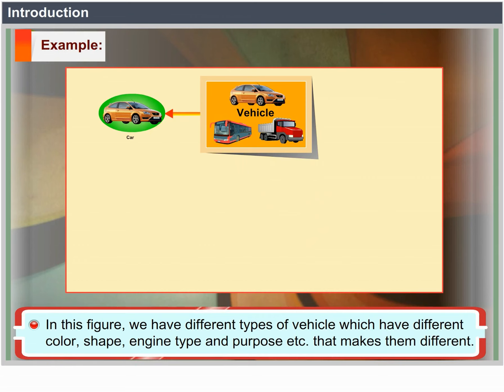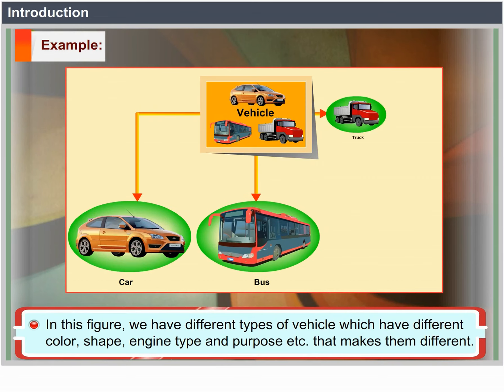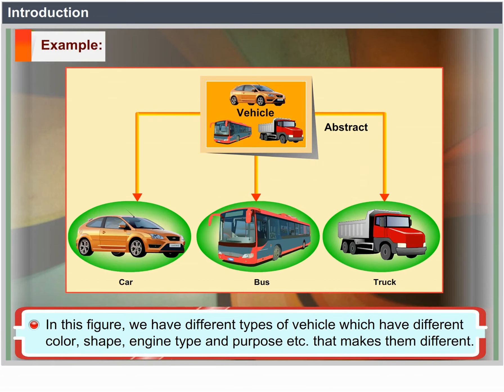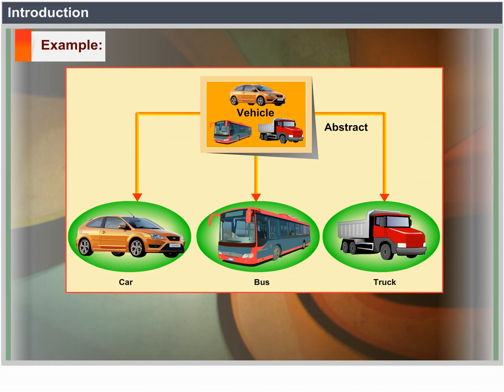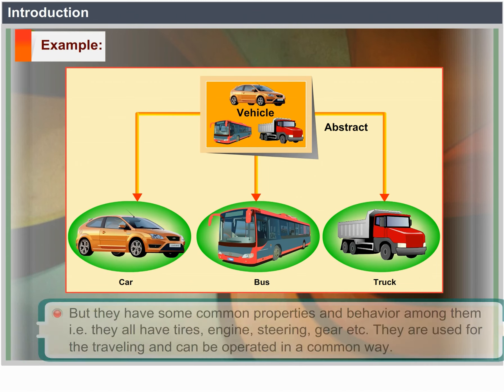In this figure, we have different types of vehicles which have different color, shape, engine type and purpose, that makes them different. But they have some common properties and behavior among them — they all have tires, engine, steering, gear, etc.